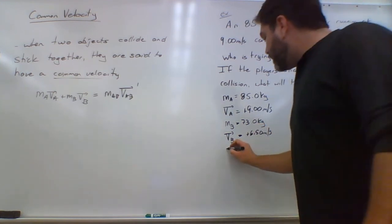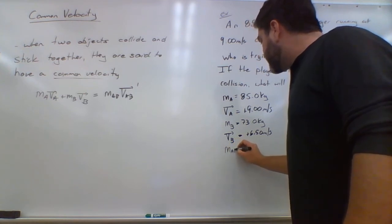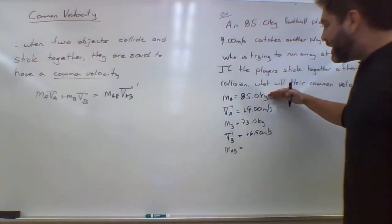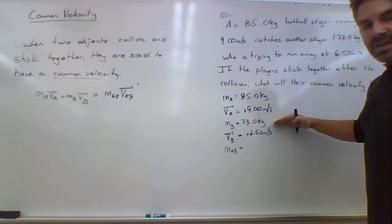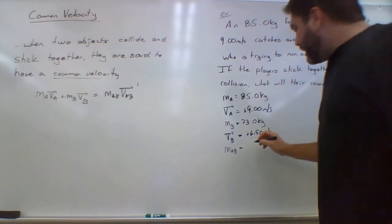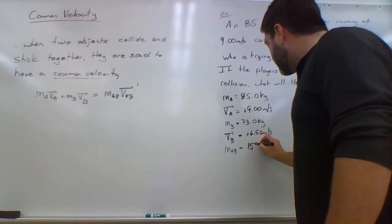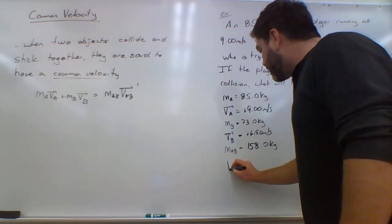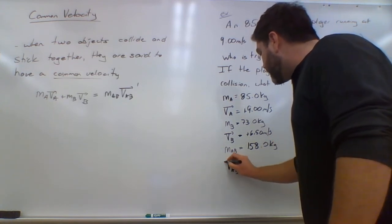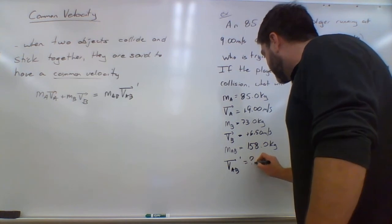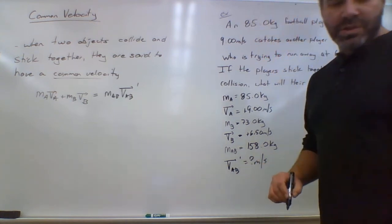Now the afterwards, the MAB, that's their combined masses. So I add together 85.0 kilograms and 73.0 kilograms, and I have 158.0 kilograms. And I want to know what their common velocity, VAB prime, is going to be, an unknown in meters per second.